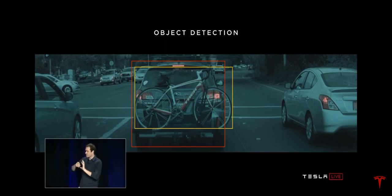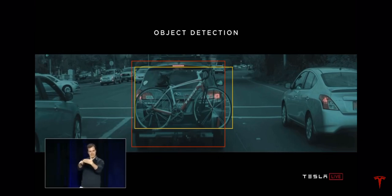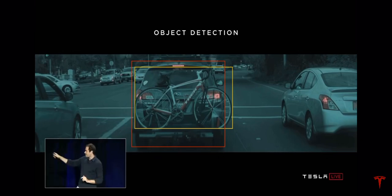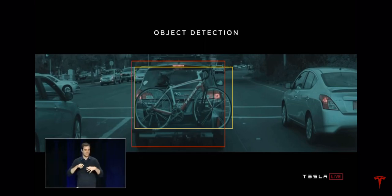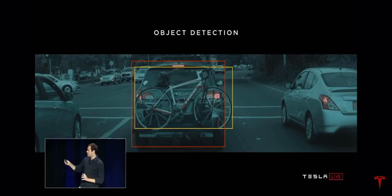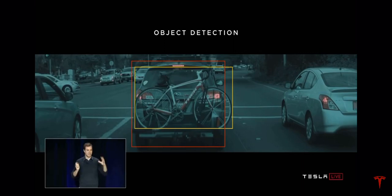But for the purposes of the controller and the planner downstream, you really don't want to deal with the fact that this bicycle can go with the car. The truth is that that bike is attached to that car, so in terms of just objects on the road, there's a single object — a single car.